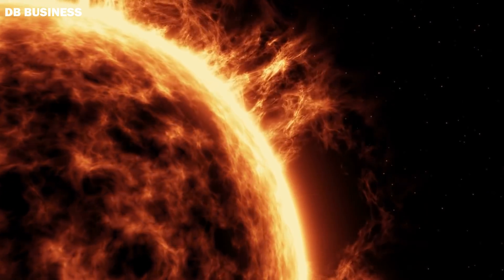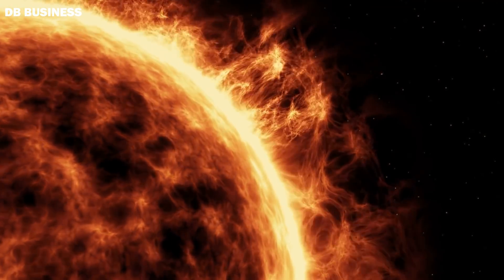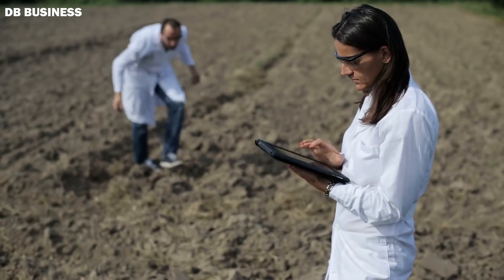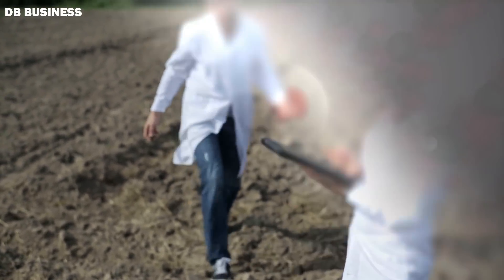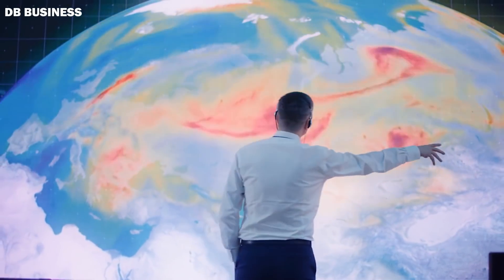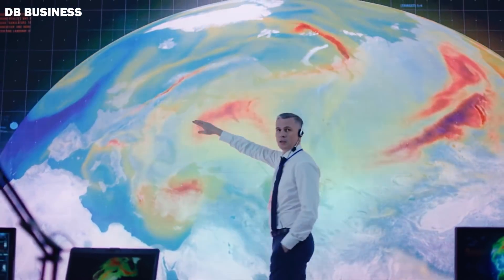However, because Venus is so close to the Sun and receives so much sunlight, scientists believe that the oceans eventually evaporated. Once the water was gone, and with it the hydrogen, carbon dioxide took over and built up in the atmosphere. This is what led to the intensified greenhouse gas effect we currently see on the planet's surface.